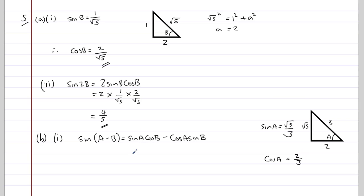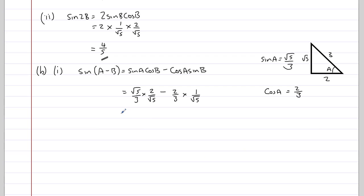So now we know all four values, we can substitute them in here. So sine A is root 5 over 3. Cos B is 2 over root 5, minus cos A, which is 2 thirds, multiplied by sine B, which is 1 over root 5. Let's simplify this down.